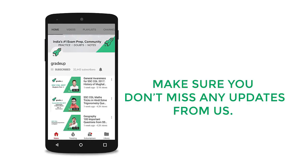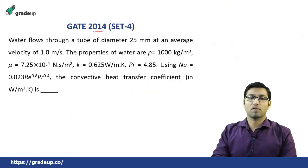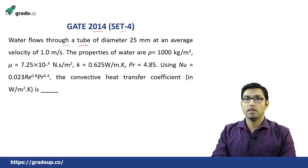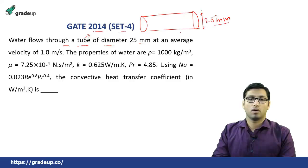The next question is from GATE 2014 Set 4. In this question, it says that water flows over a tube — that is, a pipe flow — of diameter 25 mm. The properties of water given are density, dynamic viscosity, thermal conductivity, and Prandtl number.